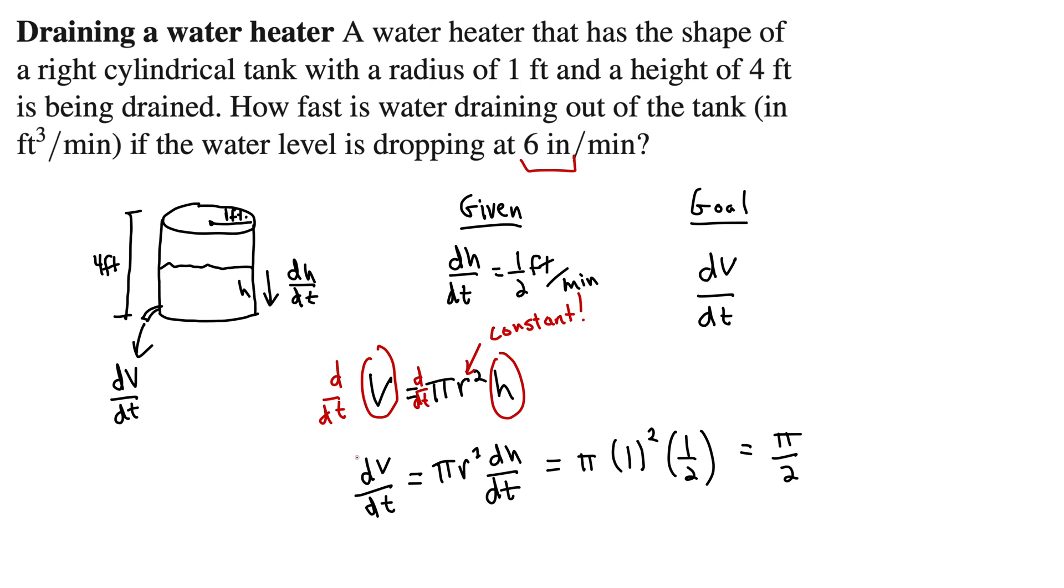And then we should throw some units on here. And you can get the units from looking at this. We have dv, that's volume, divided by time. So your unit should be volume per time. So feet cubed per minute, just to be consistent with the units we've been using throughout the exercise.